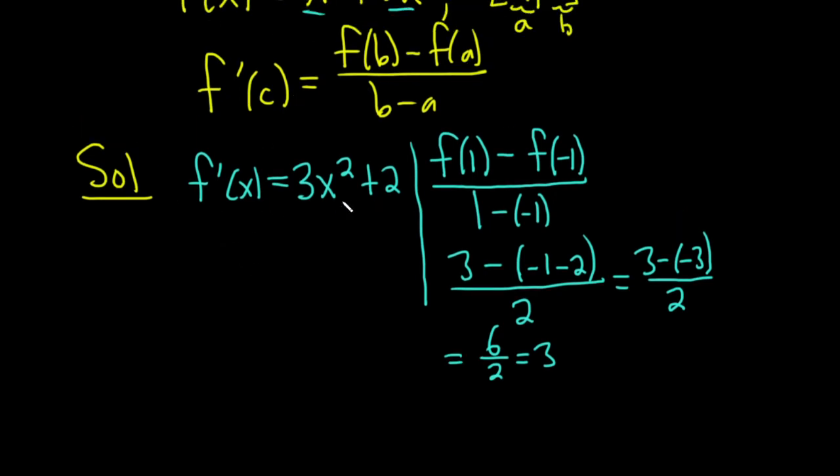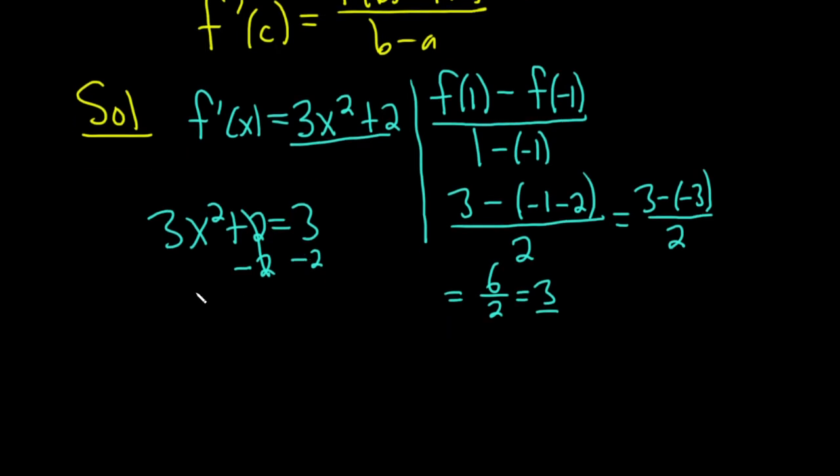And so now we just have to set it equal to this. So we have that this is equal to this. You don't have to use c, in fact I'm not going to. I'm just going to say three x squared plus two equals three. You can call it c if you like, it doesn't really matter I think. Minus two minus two. So we get three x squared equals one.